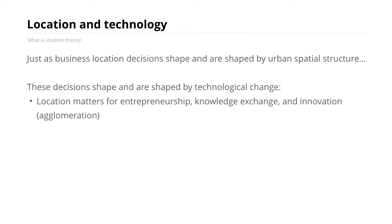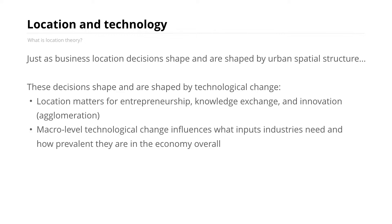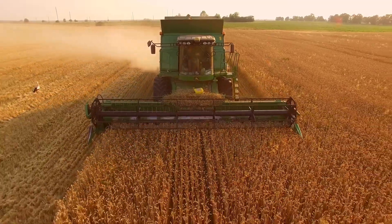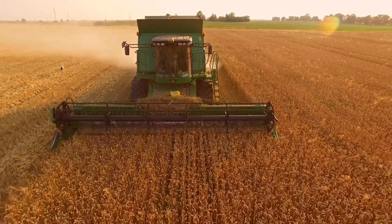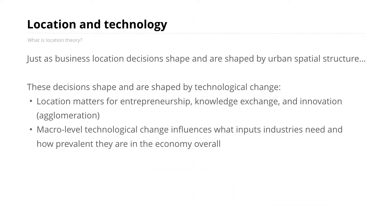Business location decisions influence large-scale technological development, but on the reverse, macro-level technological change influences what inputs industries need and how prevalent they are in the economy. For example, in the Industrial Revolution, the economy was dominated by manufacturing due to technological change from the agricultural feudal economy. Thus, the location needs of individual businesses in the industrial economy are much different — less to do with land and soil quality, more to do with proximity to inputs and the weight of different input materials.